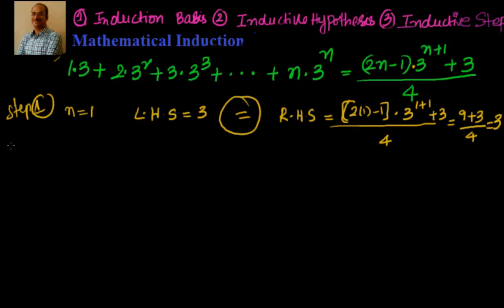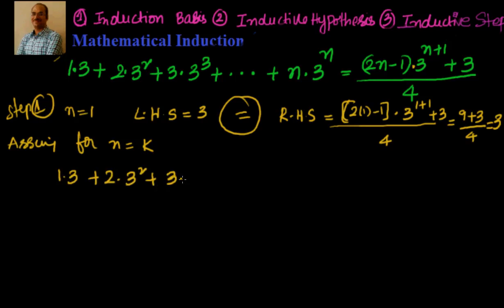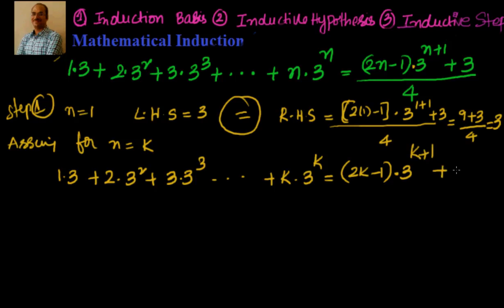Now let's assume it's true for n=k. Assuming for n=k, we have: 1·3 + 2·3² + 3·3³ + ... + k·3ᵏ = (2k−1)·3^(k+1) + 3, divided by 4. This is what we have when we assume it is true for n=k.